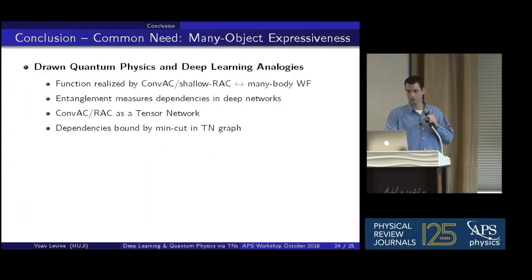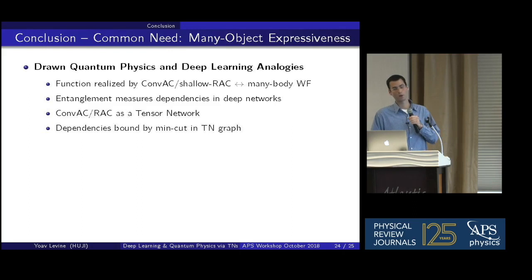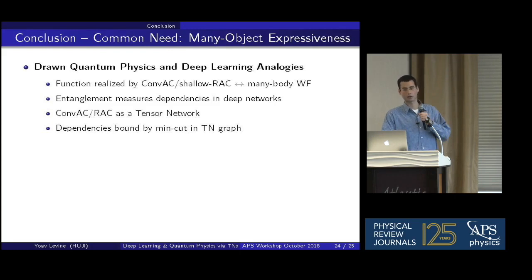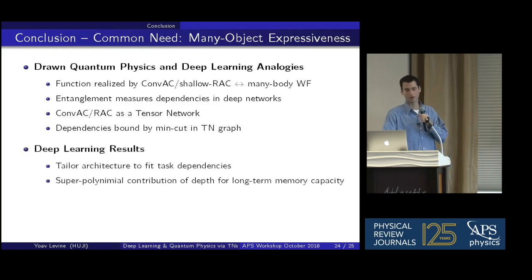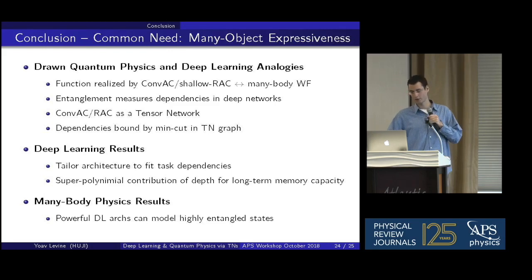To conclude: we drew an analogy between wave functions and convolutional and recurrent networks, then proposed entanglement measures as measures of dependencies modeled by deep networks with respect to their inputs, and constructed tensor network equivalents that allowed us to derive design principles for convolutional networks. We also showed a first-of-its-kind theoretical assertion of the benefits of depth in deep recurrent networks. Finally, we showed that state-of-the-art deep learning architectures can model highly entangled states, so there is no theoretical barrier to using ConvNets and RNNs to model wave functions. Thank you.